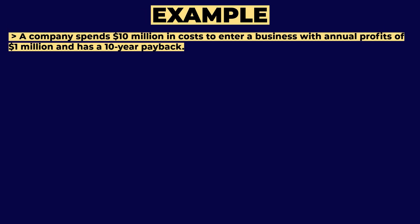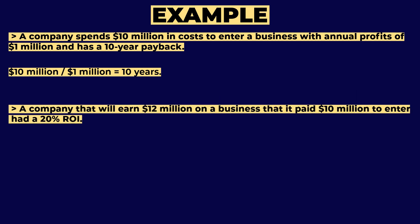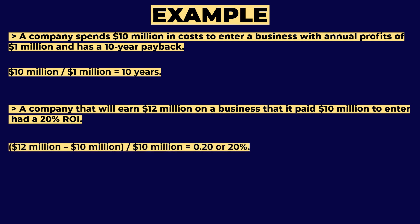Let's go over some examples. A company spends $10M to enter a business with annual profits of $1M — that's a 10-year payback ($10M ÷ $1M = 10 years). A company that earns $12M on a business it paid $10M to enter has a 20% ROI (($12M − $10M) ÷ $10M = 0.20). This tells you that for every dollar the company invested, it earned a 20% return.